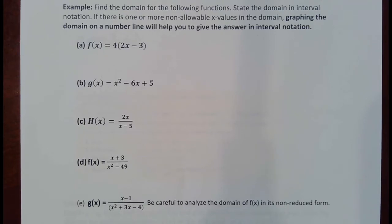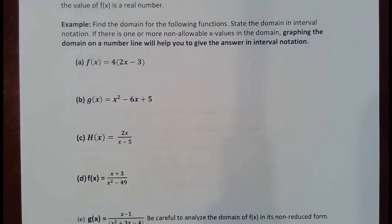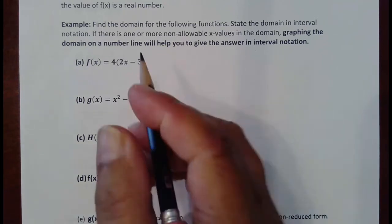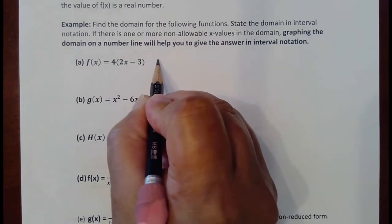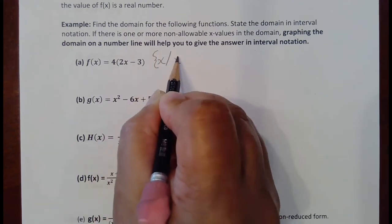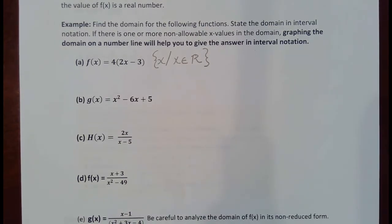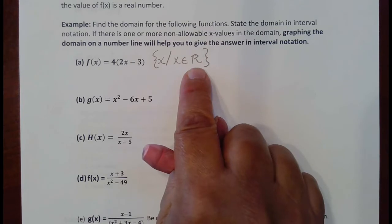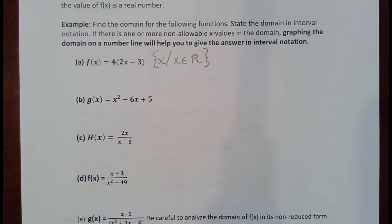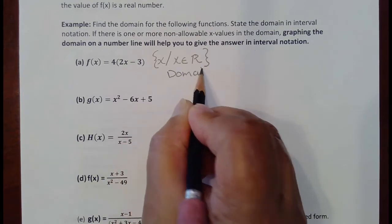In the first problem, this is not a fraction and not a radical — the two situations you have to worry about. Since it's neither, x can be any real number. You can say it in set-builder notation: x is the set of numbers such that x can be any real number. If there were non-allowable values, you would state the exceptions.